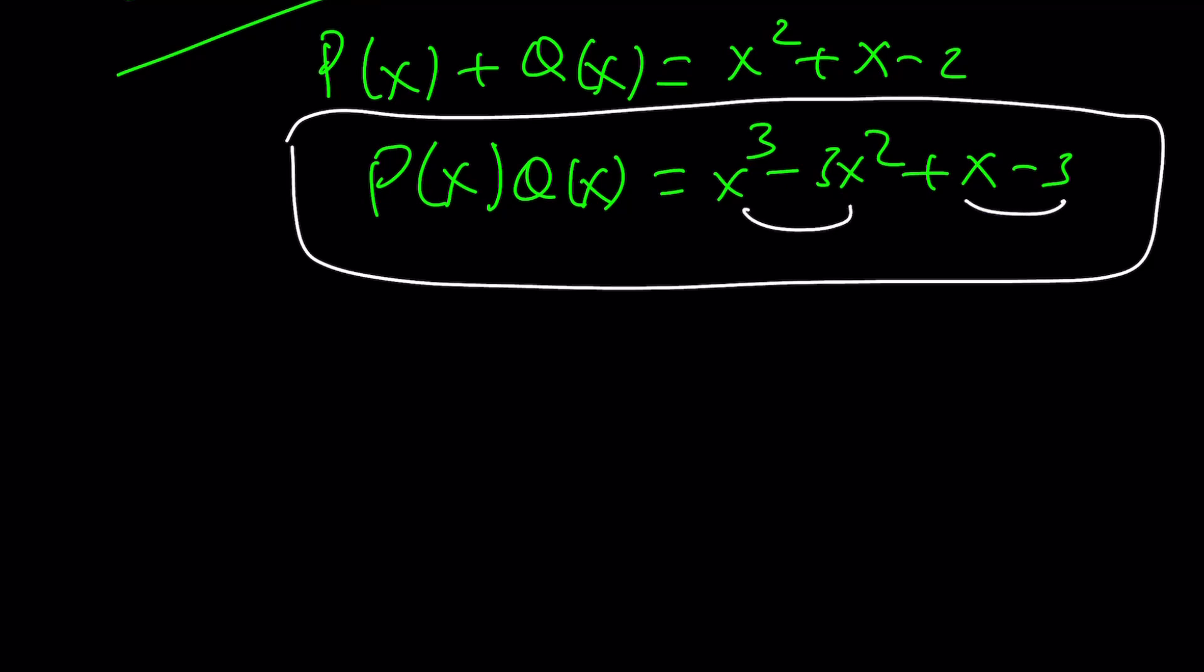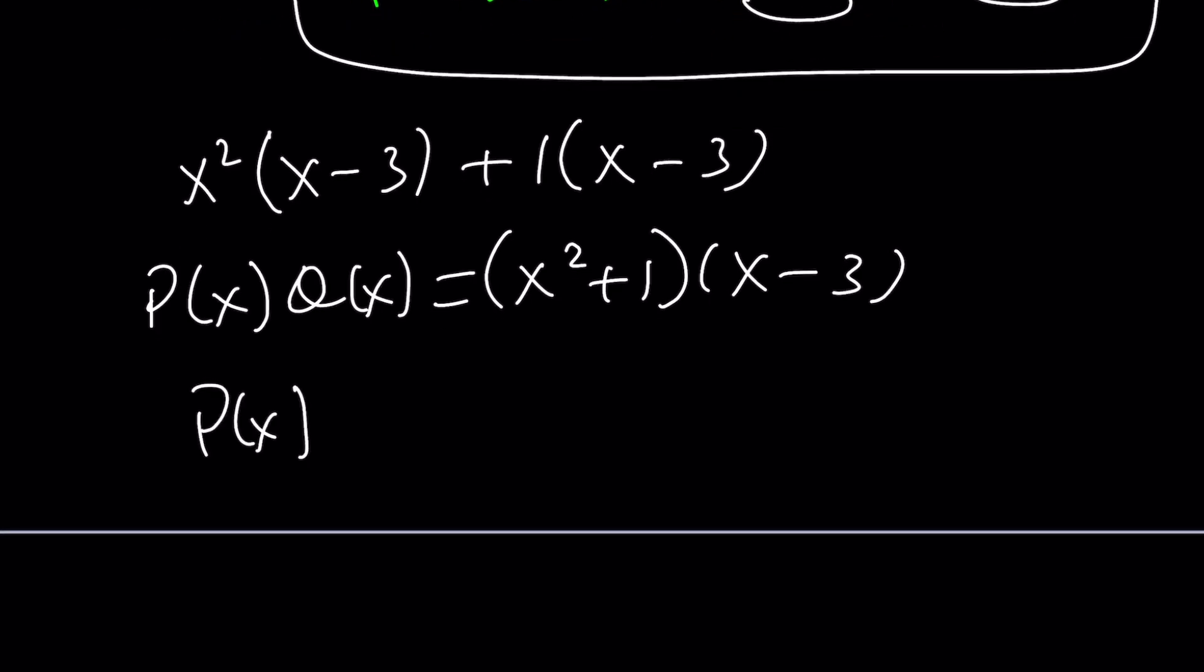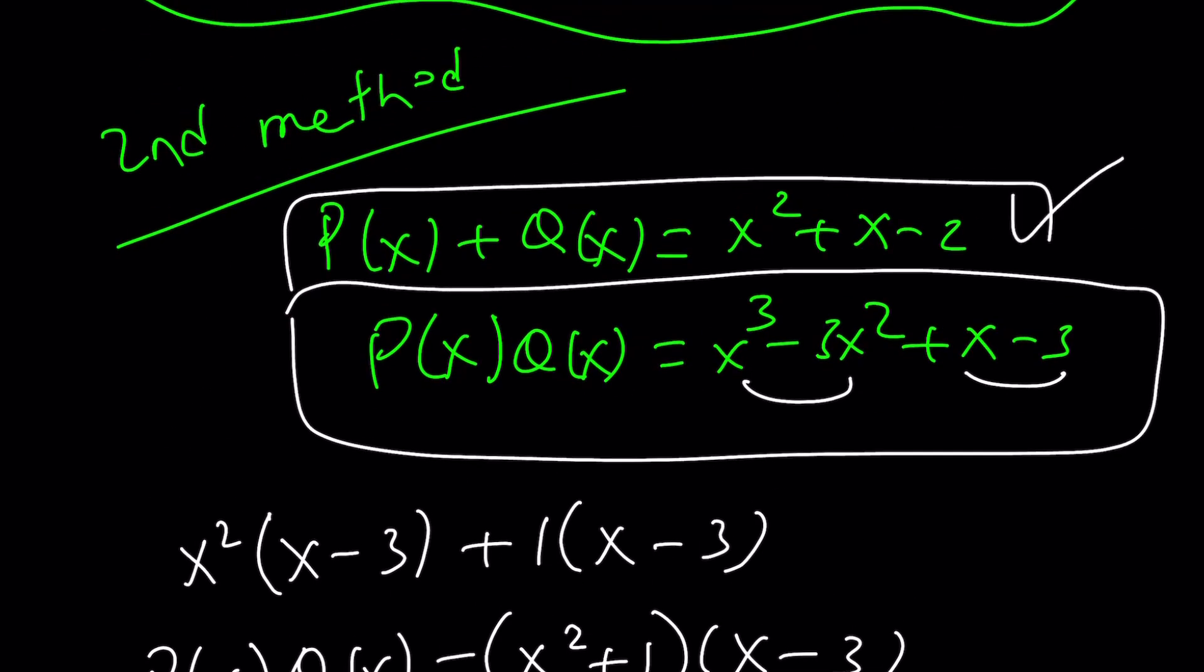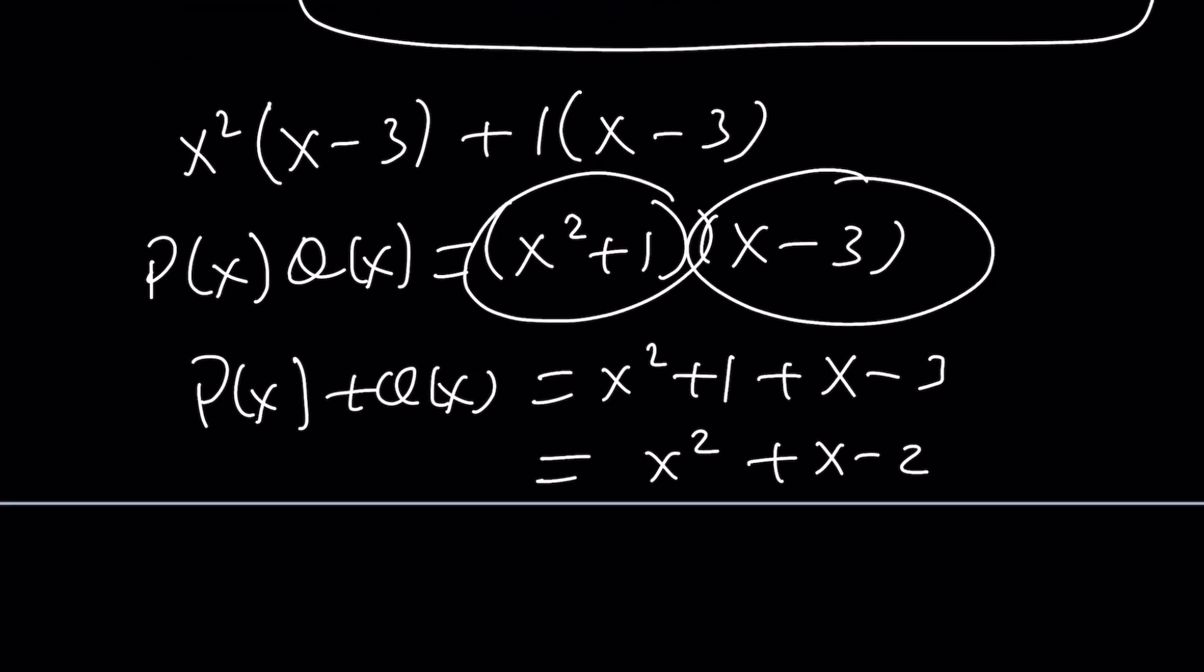Let's go ahead and factor it. This is factorable by grouping. I can go ahead and take out x²(x - 3) + 1(x - 3). So P(x)Q(x) becomes (x² + 1)(x - 3). Okay great. Then does that mean P(x) is one of them and Q(x) is the other? It should be that way, but let's look at their sum. P(x) + Q(x) should be the sum of these two things: x² + 1 plus x - 3, and that's indeed x² + x - 2, which is what we have. Yay, awesome! So this works, which means P(x) is this one and Q(x) is this one, or the other way around.